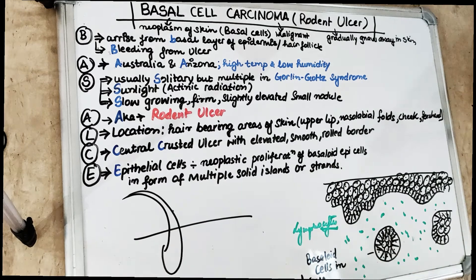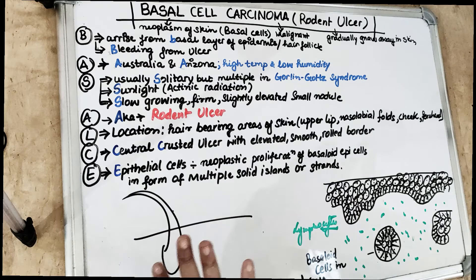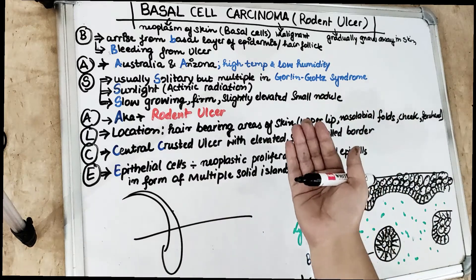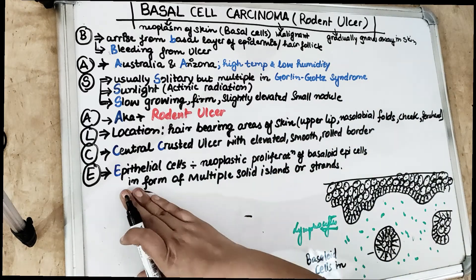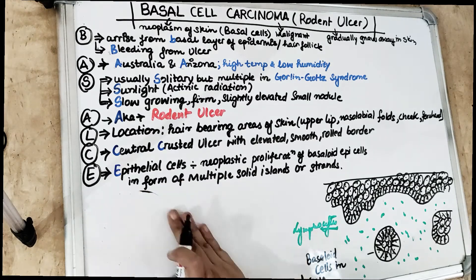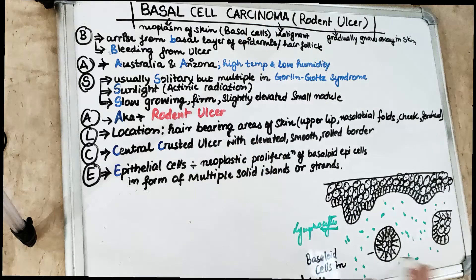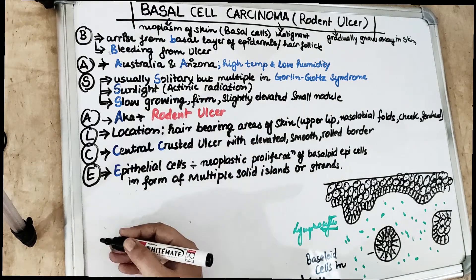It is mostly seen in regions where there is direct sunlight and where people have less protection and less melanin. So white people usually have more chances of skin cancer compared to darker-skinned people. Melanin pigment provides some immunity to skin cancer. Talking about basal cell carcinoma — to make it easier for you to remember, I have made a mnemonic out of the words 'basal cell'.